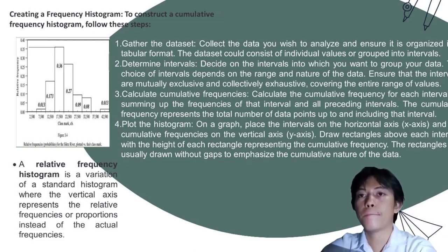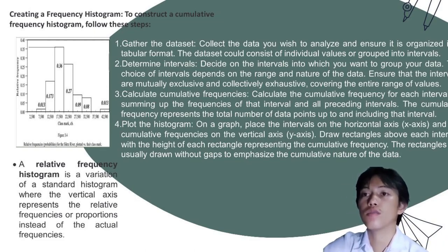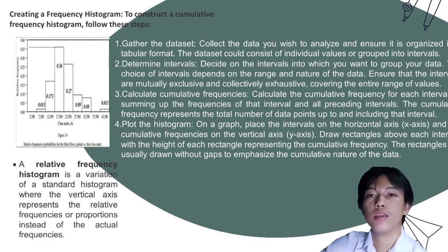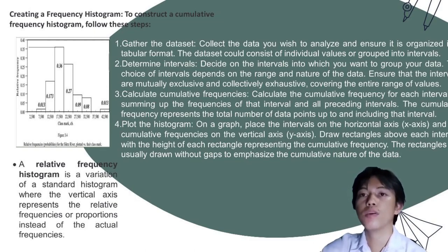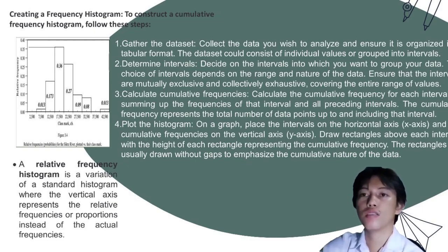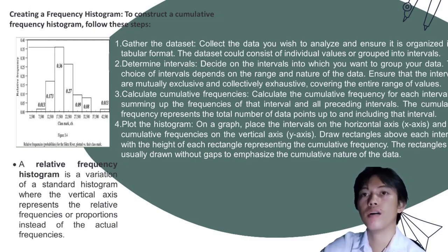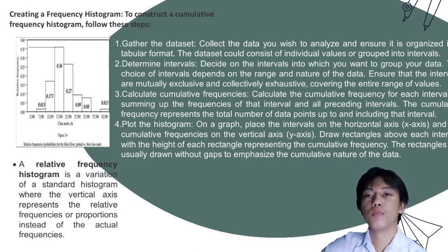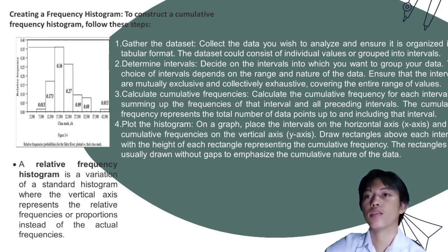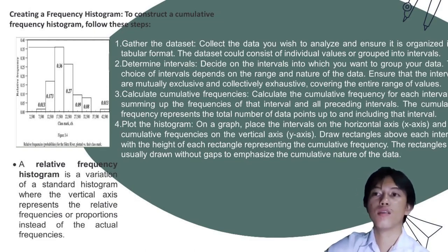To construct a cumulative frequency histogram: gather and organize the data set in tabular format; determine the class intervals ensuring they are mutually exclusive and collectively exhaustive; calculate the cumulative frequency for each interval by summing up the frequencies of that interval and all preceding intervals; then plot the intervals on the x-axis and the cumulative frequencies on the y-axis, drawing rectangles above each interval with height representing cumulative frequency, usually without gaps.